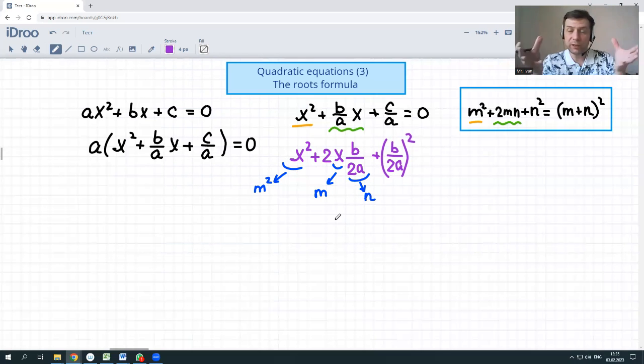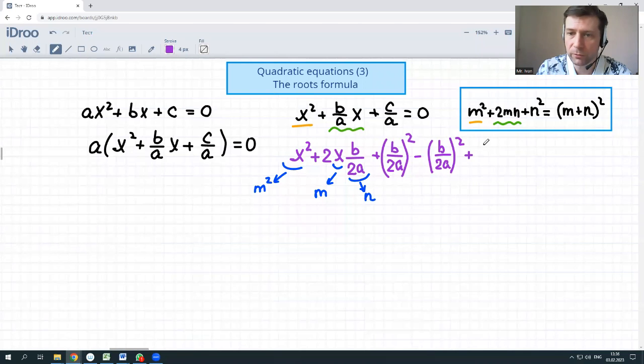That's the whole thing. Now we have added b over 2a squared, but it was not here in the original expression. That's why, in order to keep everything fair and correct, we should subtract the same thing. If we add and subtract the same thing, it would be just zero, and to add zero is no problem at all. Then plus c over a